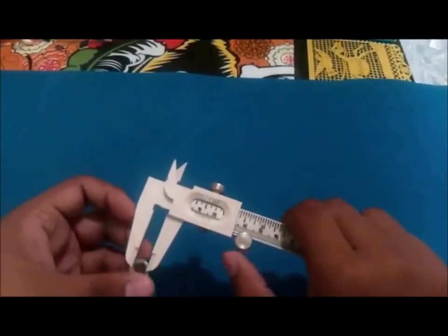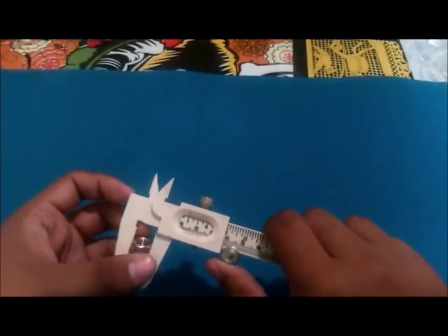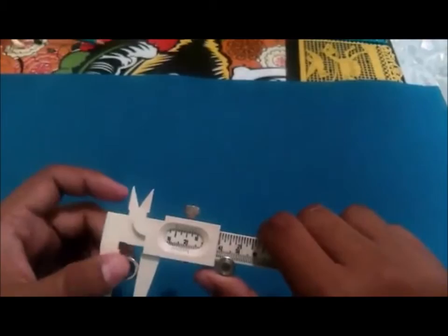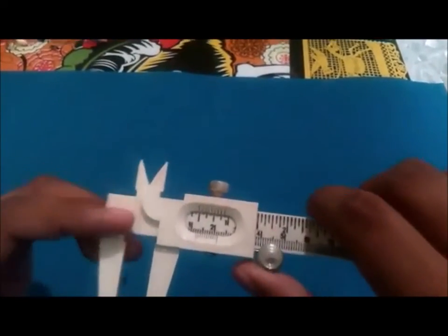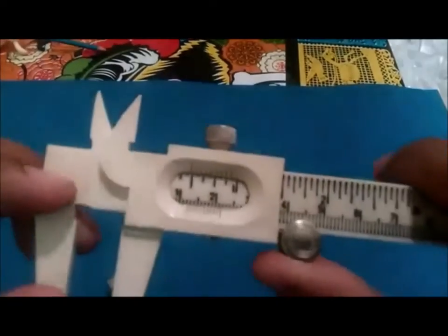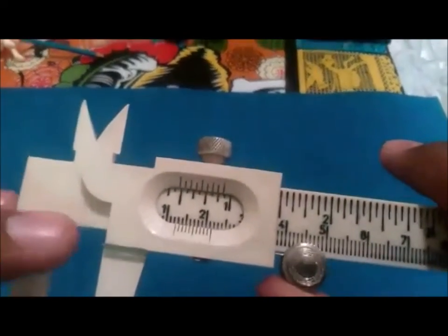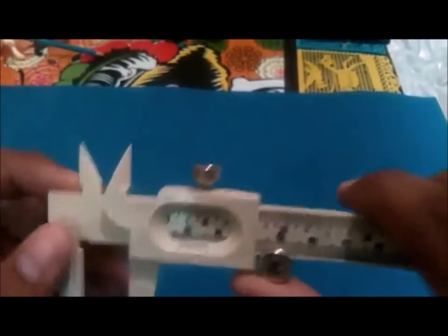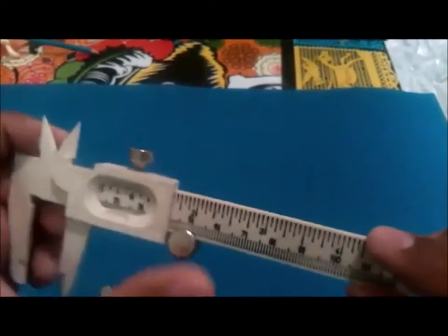Para leer las medidas exteriores, la primera parte que vamos a leer es el número de centímetros que se ven enteros y la segunda es cuál parte del nonio coincide con la parte de la regla graduada en centímetros. También cuenta con reglas graduadas en pulgadas.